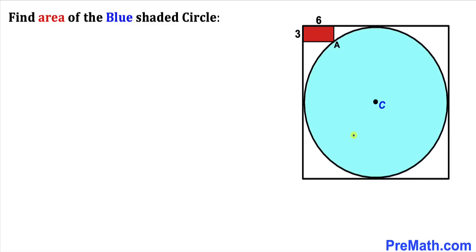Welcome to PreMath. In this video we have a blue circle and red rectangle inscribed in a square, such that point A is the point of contact between the rectangle and the circle. The dimensions of the red rectangle are 3 and 6 units. We are going to calculate the area of this blue shaded circle.